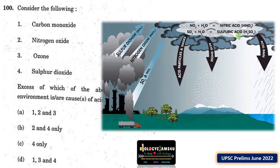It comes along with the rain making the rain acidic, therefore it is called acid rain. Acid rain can cause change in acidity in rivers, lakes, and water bodies, and also causes many types of destruction within terrestrial vegetation. Therefore, nitrogen oxide and sulfur dioxide are responsible for acid rain, making option B — 2 and 4 only — the correct answer.